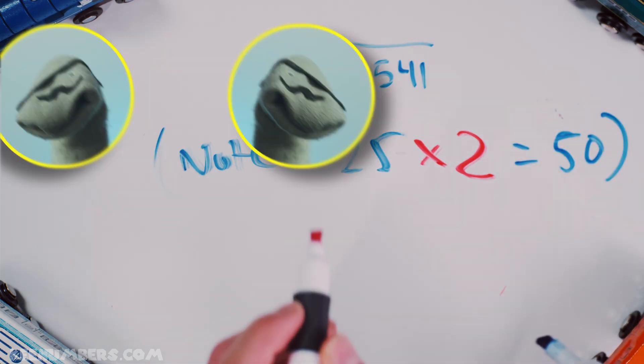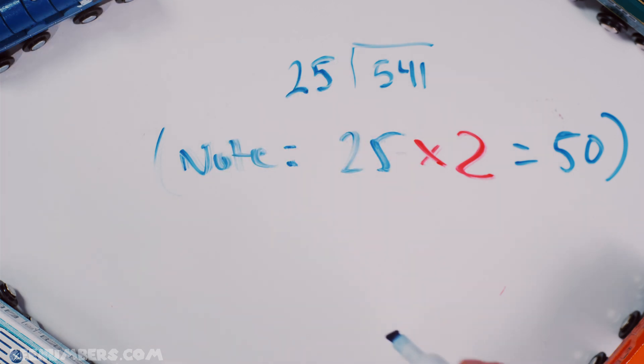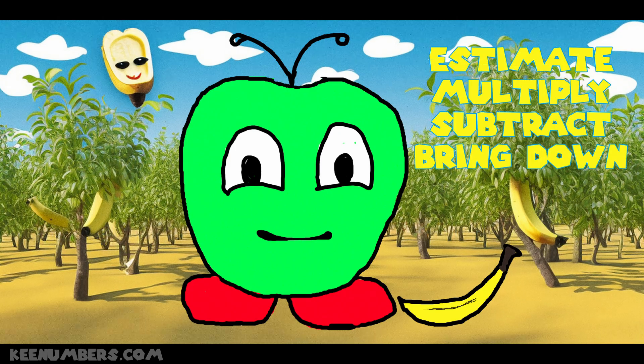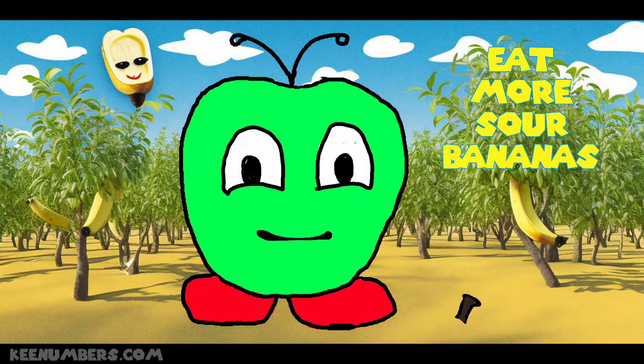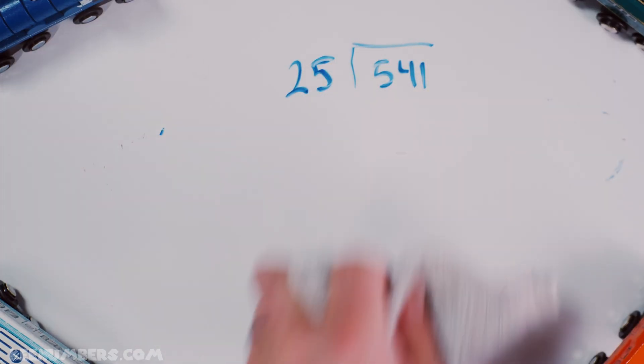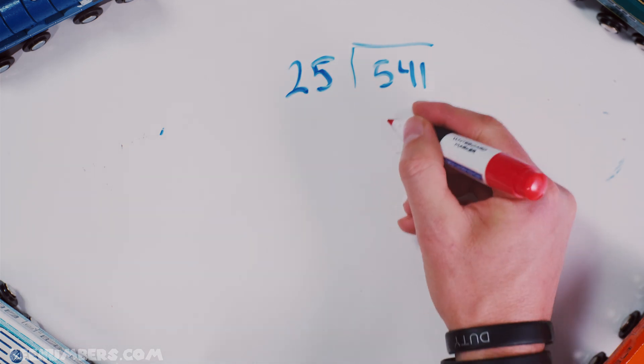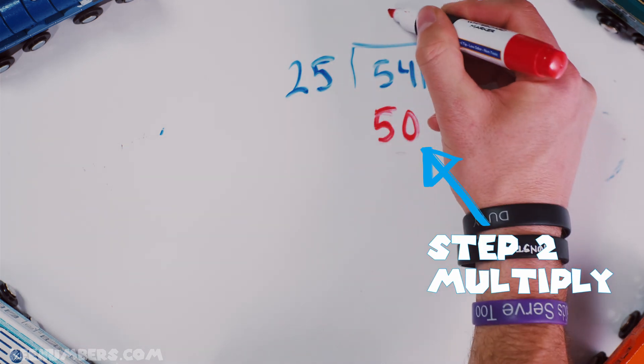So we are going to use that estimate to help us make this division possible. Step 1, estimate. Step 2, you're going to multiply. We're gonna have 2 25s, which is also known as 50.